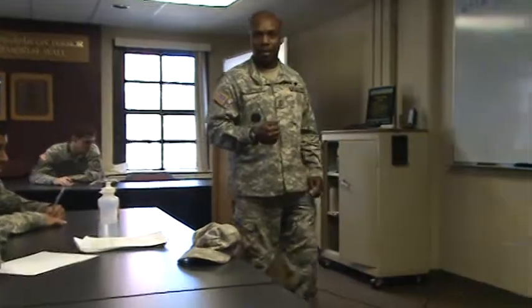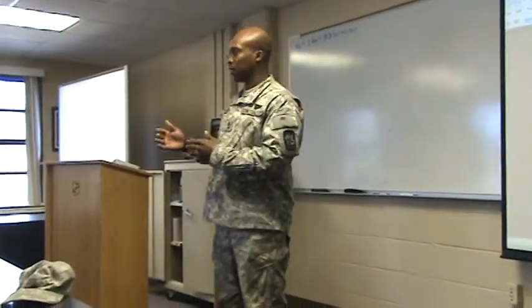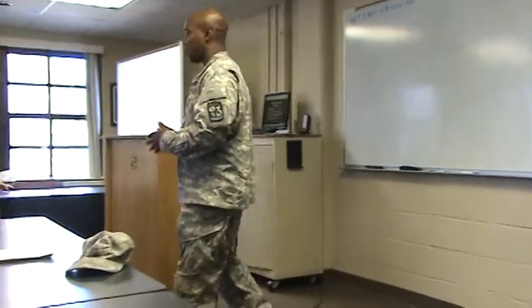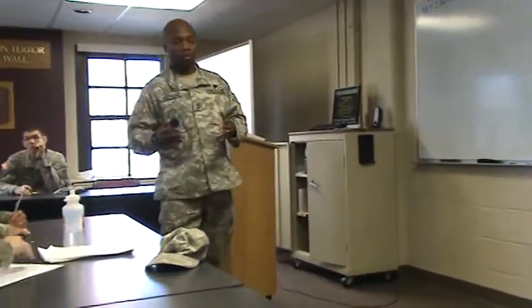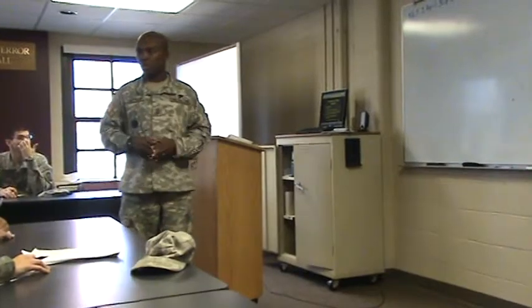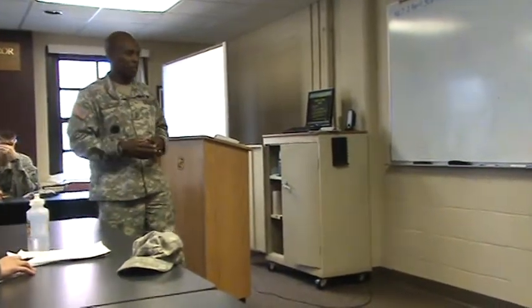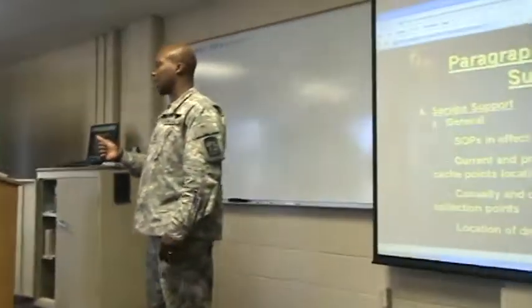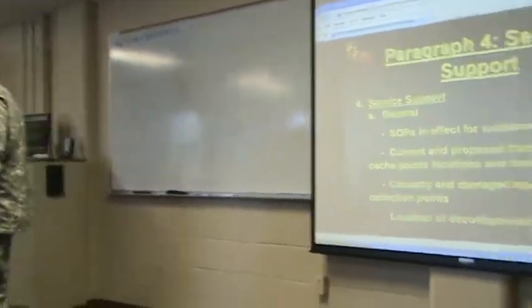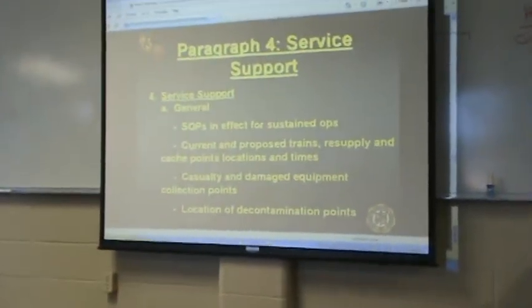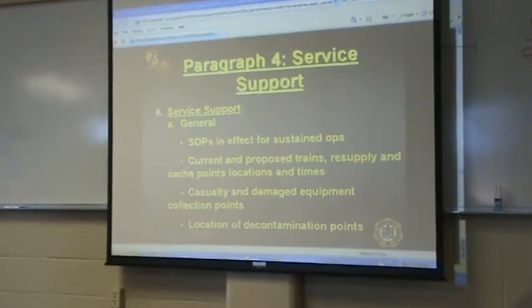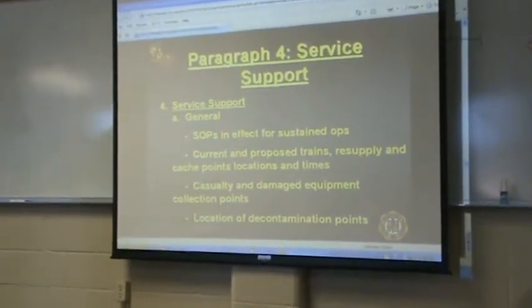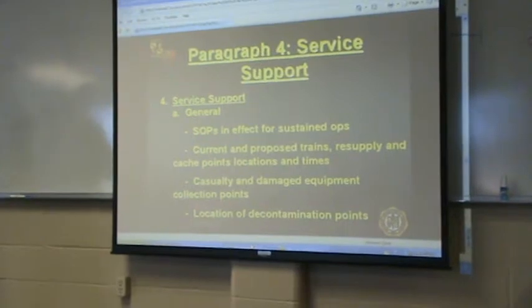We already practiced those during our labs and FTX — casualty collection points. When we get casualties, we have a designated area to take personnel that are injured or killed. We'll take them to a certain location and have someone come pick them up. Also, location of decontamination points — since the enemy may have NBC capabilities, we've got to have a decontamination point far away from other elements to protect personnel from further contamination.